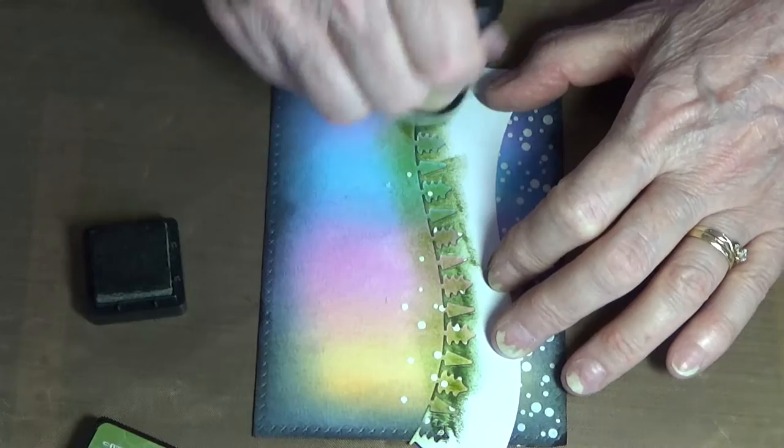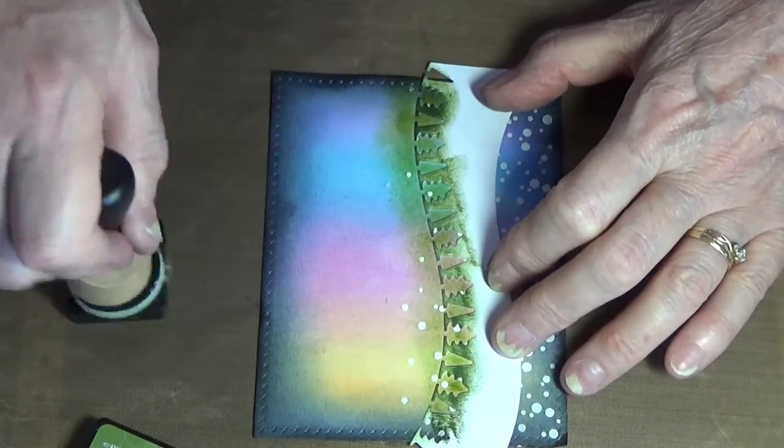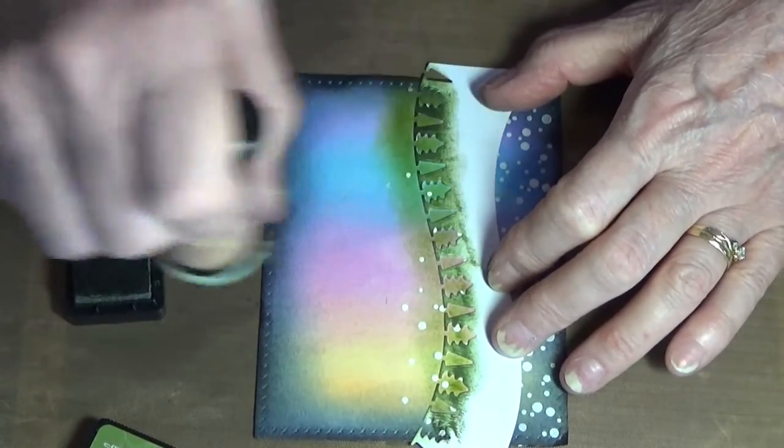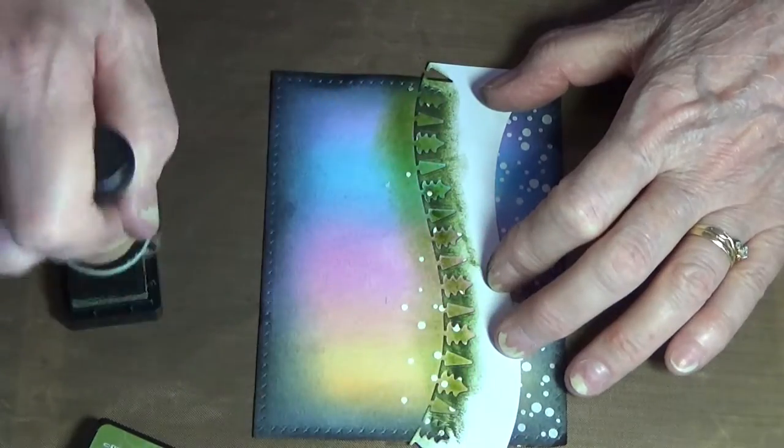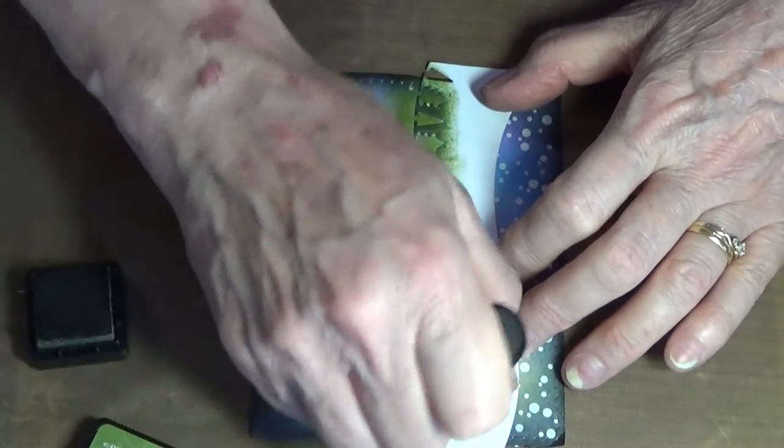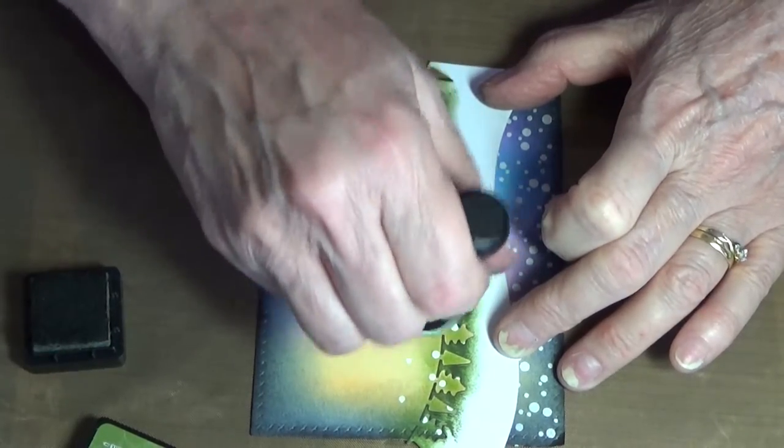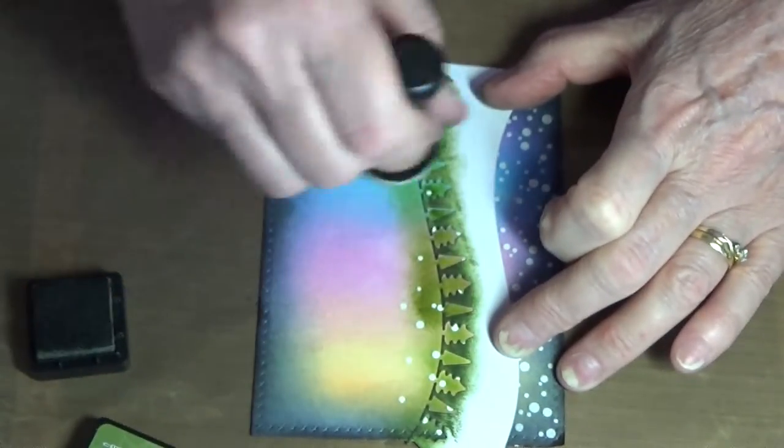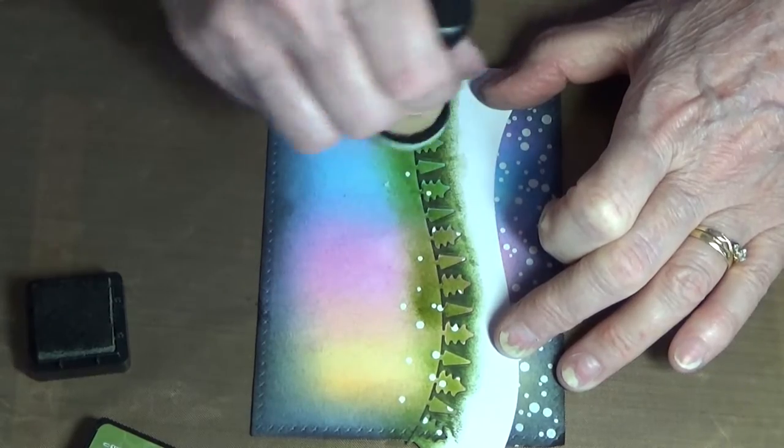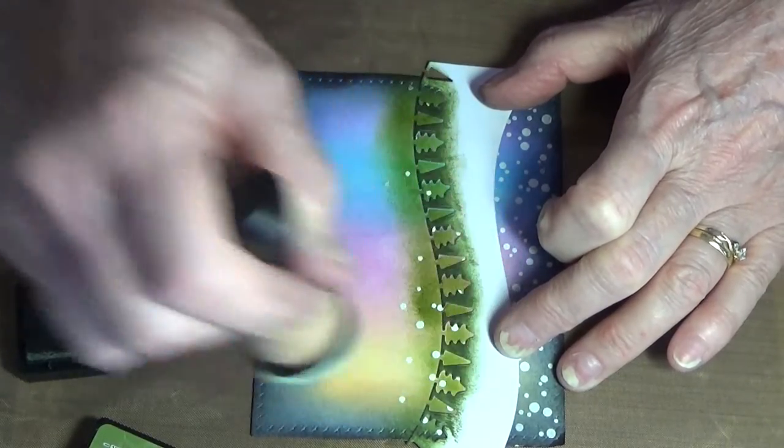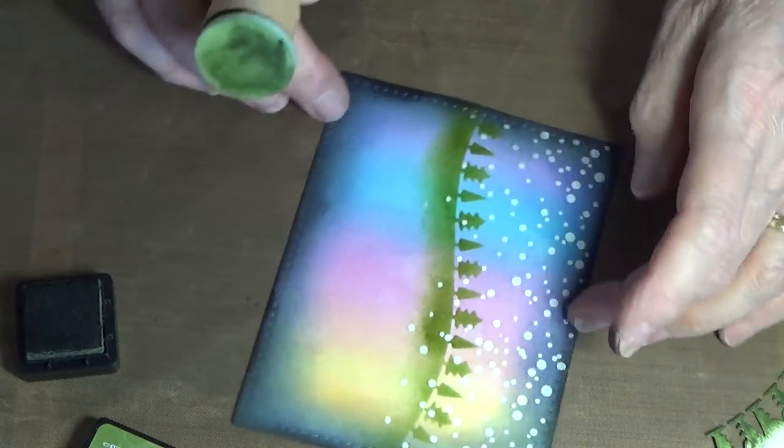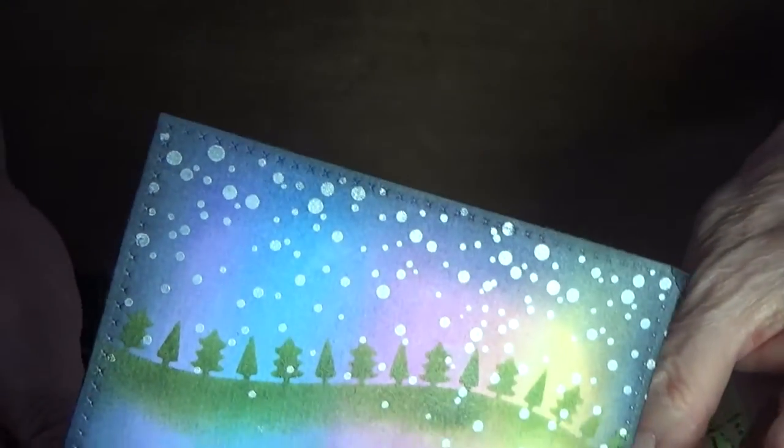I'm not sure what ink I'm using for the shadowing. I use Forest Moss on the trees themselves. It really doesn't matter though—you could use any green. I've chosen to use two different greens: the brighter one on the back scene, and Forest Moss on the actual tree cutouts.